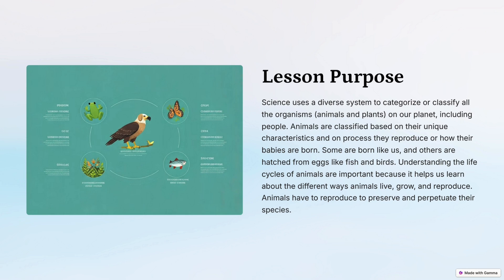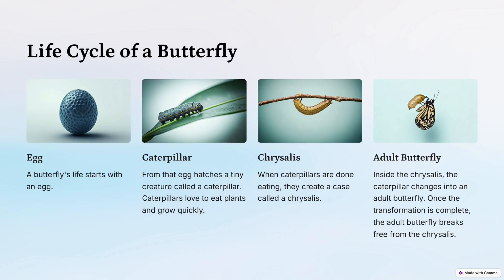Let's start with the life cycle of a butterfly. A butterfly's life starts with an egg. From that egg hatches a tiny creature called a caterpillar. Caterpillars love to eat plants and grow quickly. When caterpillars are done eating, they create a case called a chrysalis. Inside the chrysalis, the caterpillar changes into an adult butterfly.